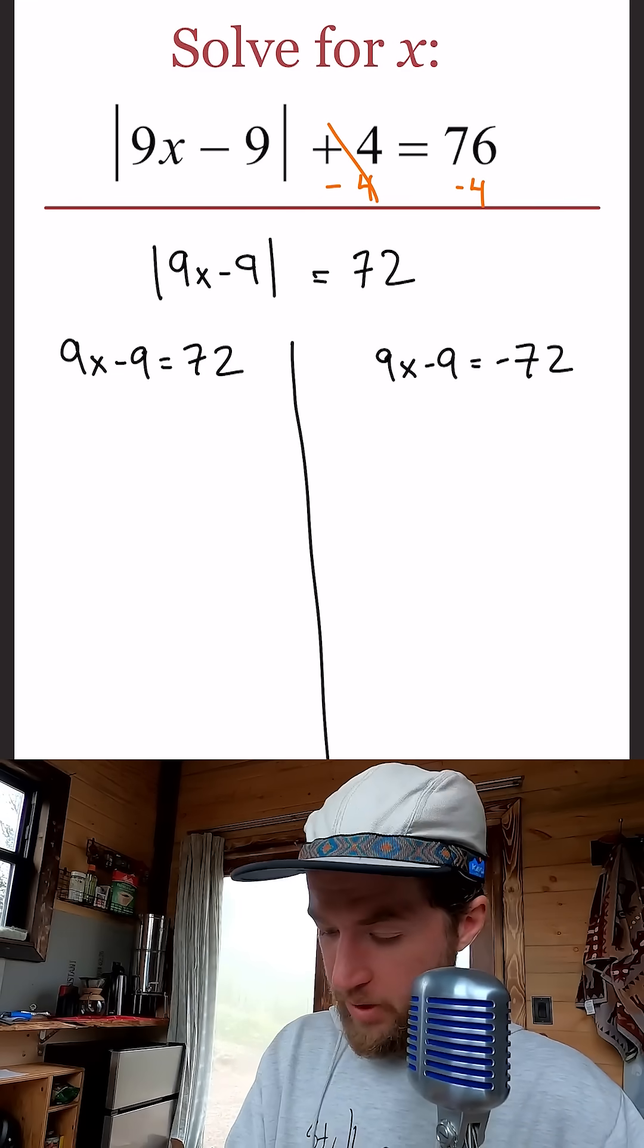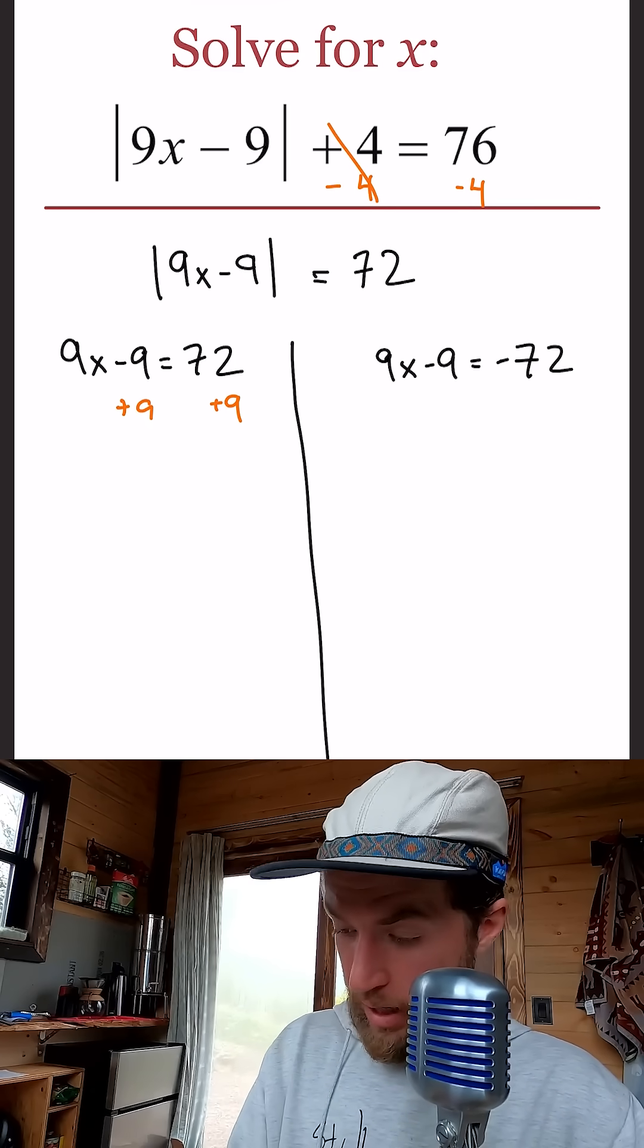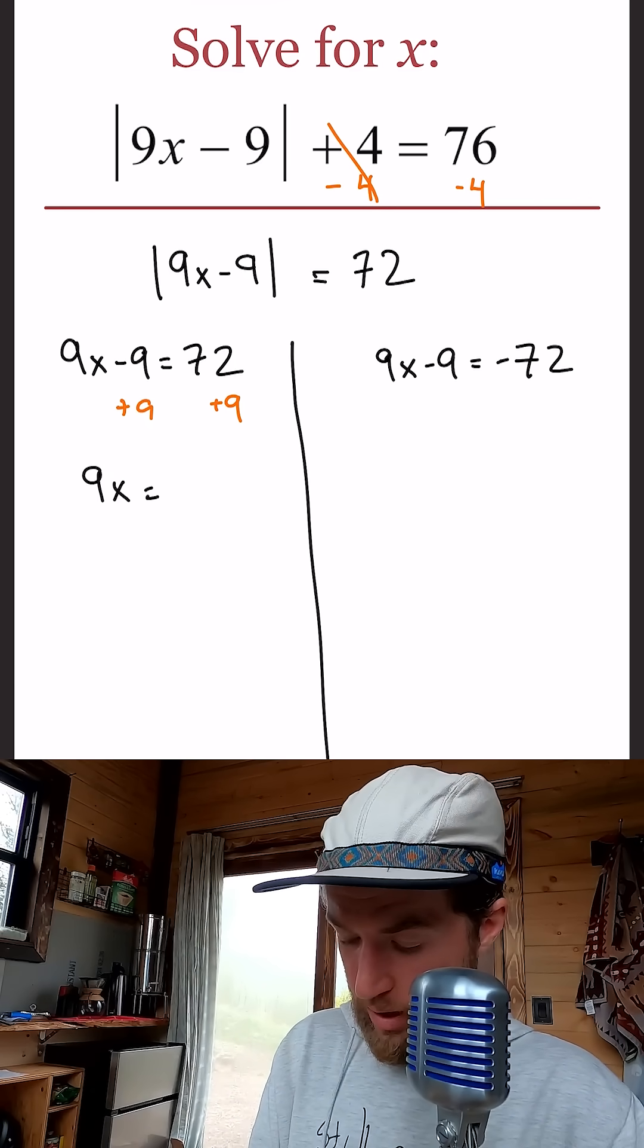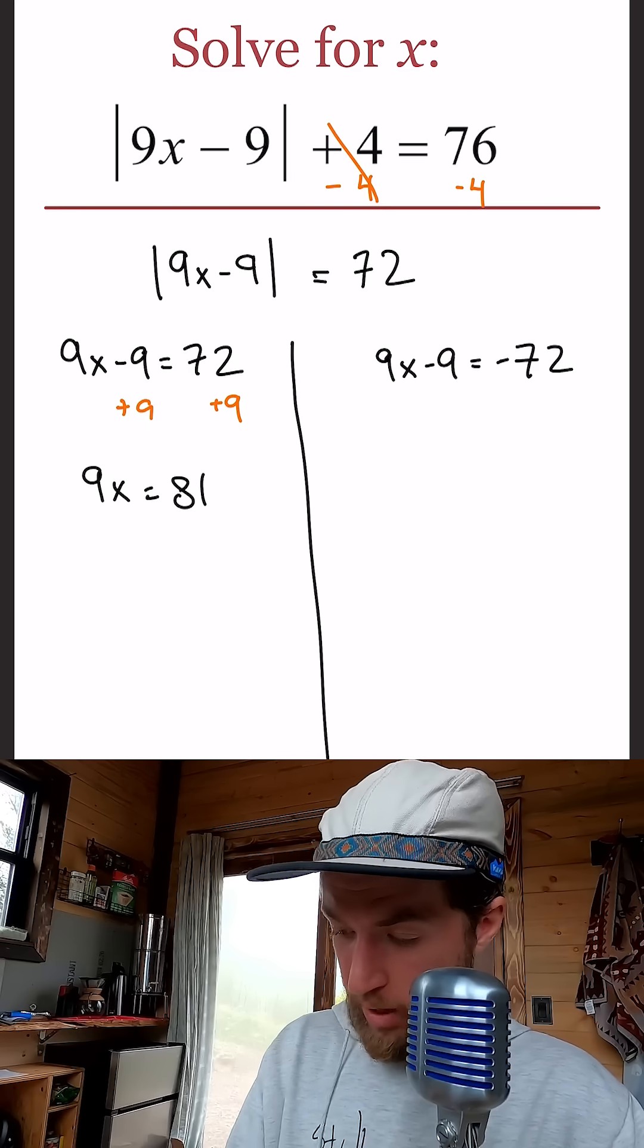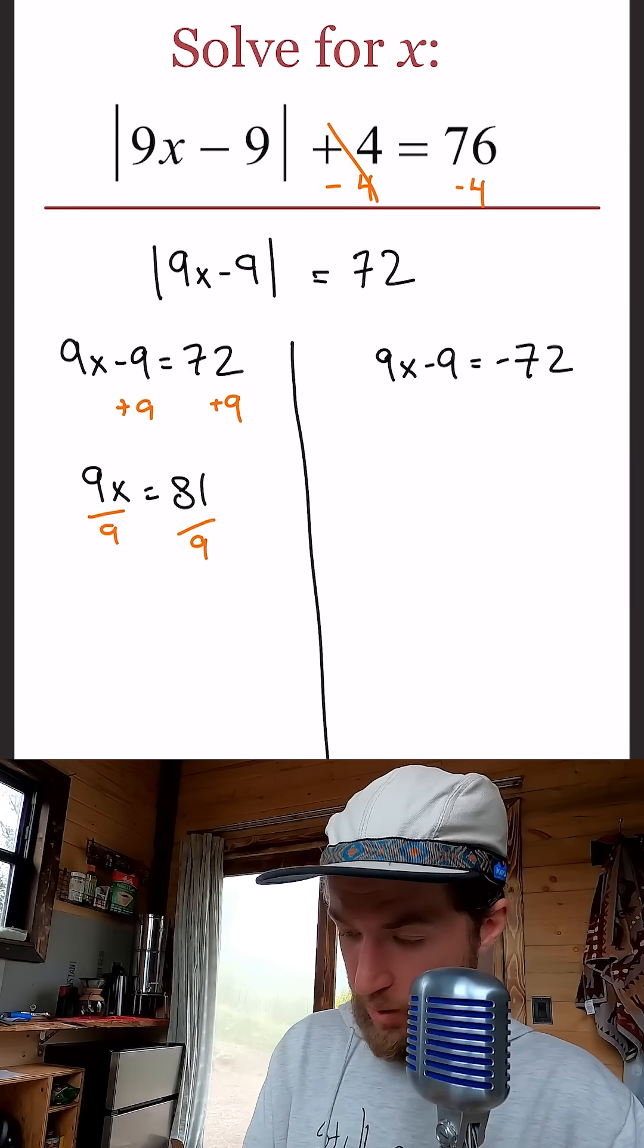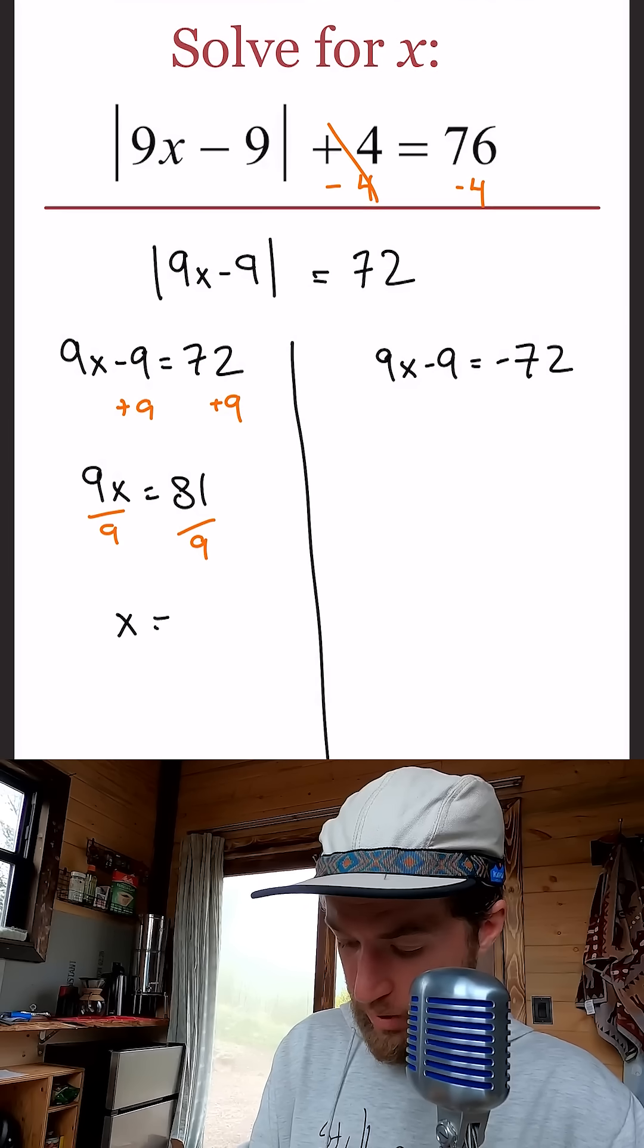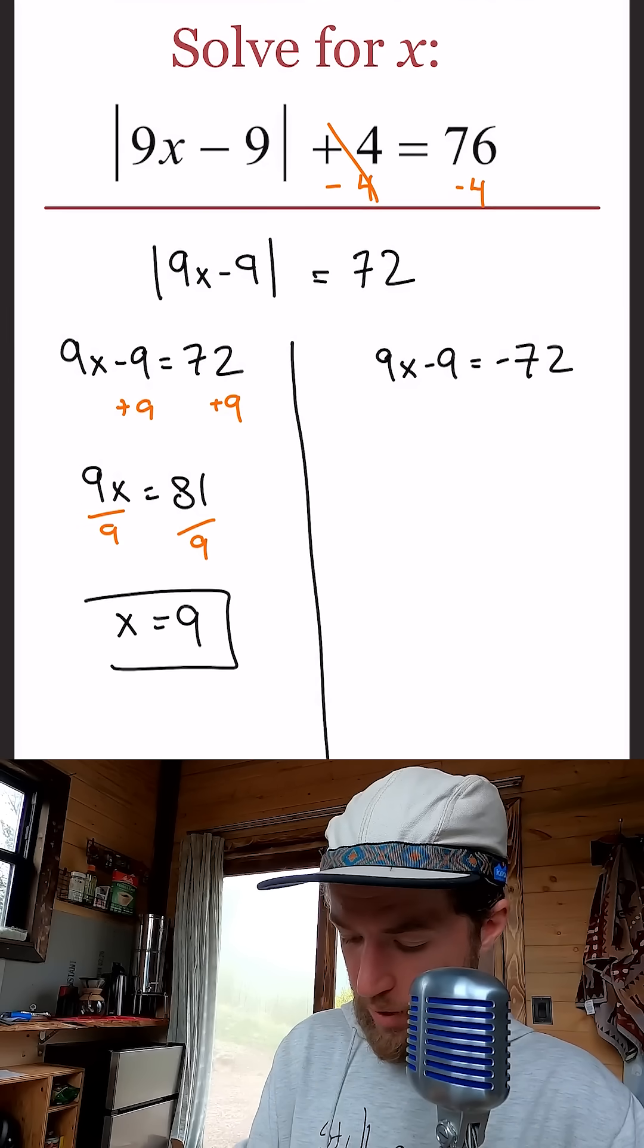Start with the left side. Add 9 to both sides. 9x equals 81. Divide by 9 on both sides. 81 divided by 9, therefore x equals 9. There's one of our answers.